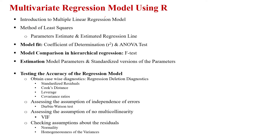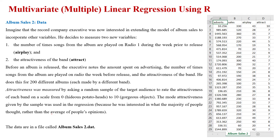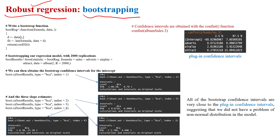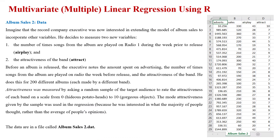As we have discussed in our previous video lecture, one of the multiple linear regression model's assumptions is to check that the residuals should be normally distributed, and the variances of the residuals must be homogenous, whether we are applying simple or multiple linear regression. So if those assumptions are failed, in that particular case we can apply the bootstrapping technique on the multiple linear regression.